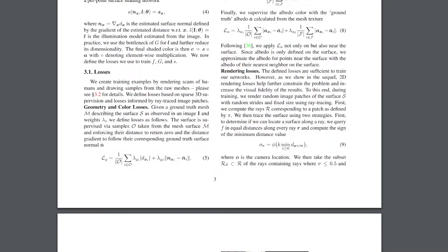Now let's talk about the losses used during training. Losses are very important because they guide the neural network towards perfection — getting as close as possible to the intended result. In this case, we're trying to rebuild a 3D model from a 2D photo. At each step during training, the neural network creates a 3D model, and we need to evaluate whether it's good or bad, and tell the network if it's getting better or worse. There are two types of losses in Forum: losses from 3D sparse supervision and losses from rendering.